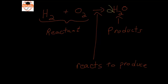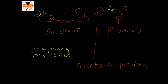In order for the reaction to be mass balanced — and there will be another review video on balancing chemical reactions — we would have to have some coefficients. The coefficients mean the number of molecules. So this would say that two molecules of hydrogen would react with one molecule of oxygen to produce two molecules of water. These numbers in yellow have a name, and that name is coefficients.